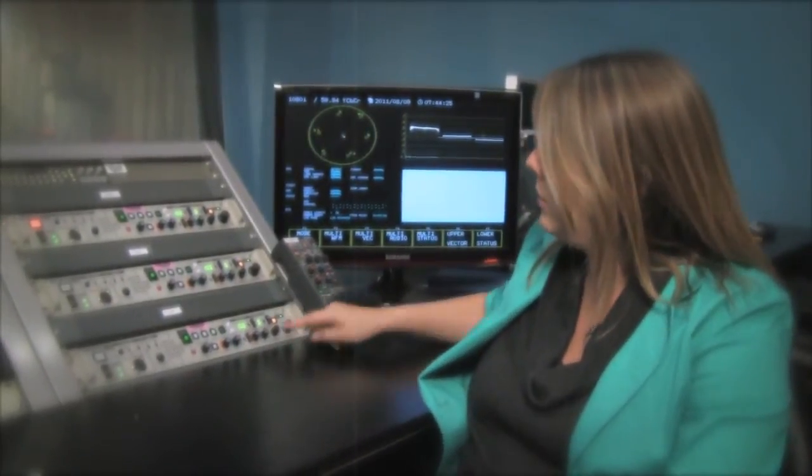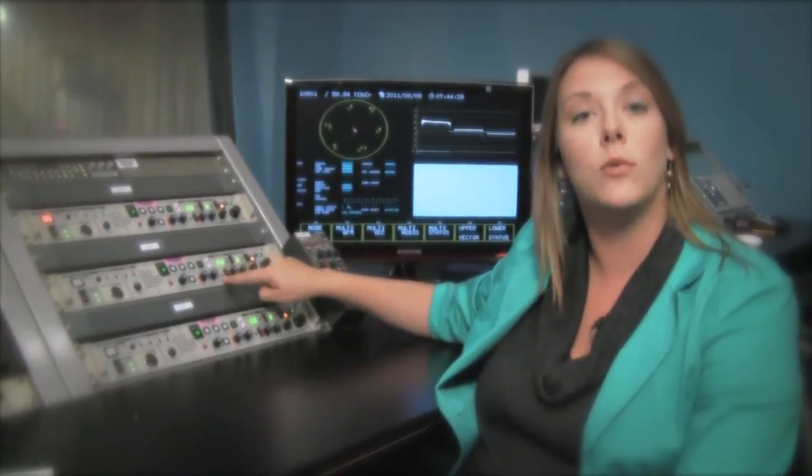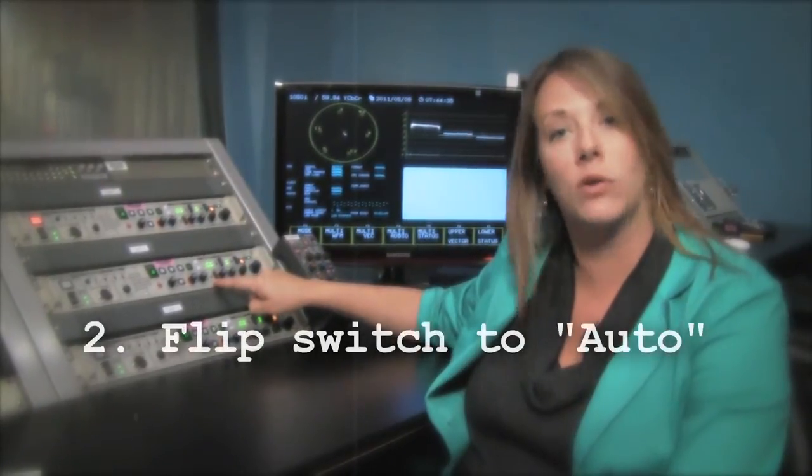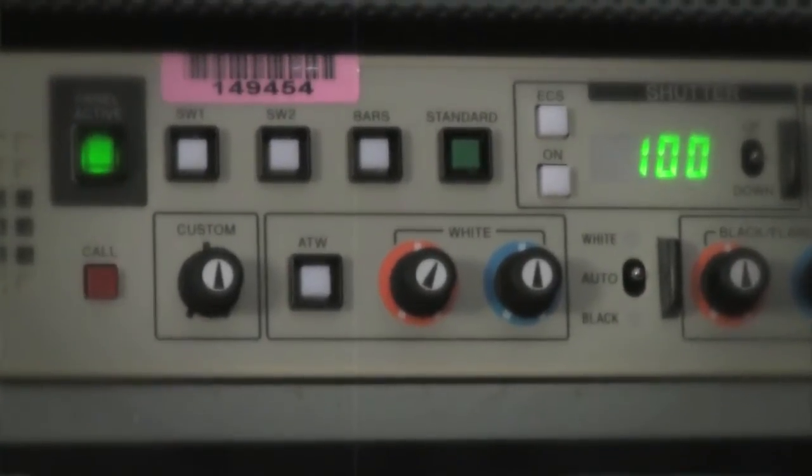Now we're ready to white balance. In this particular CCU, we have a toggle switch here where it says auto, white or black. So you can white balance or black balance. For a simple white balance, all you need to do is toggle the switch up, let go. You'll see the light will turn red and then turn off. That means that you have completed your white balance.